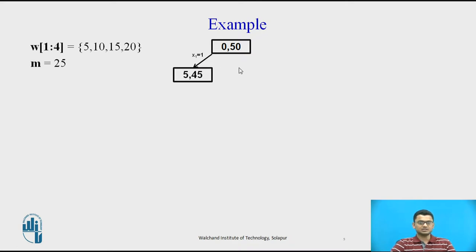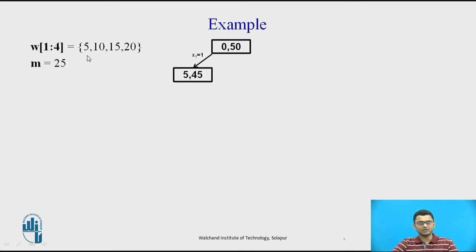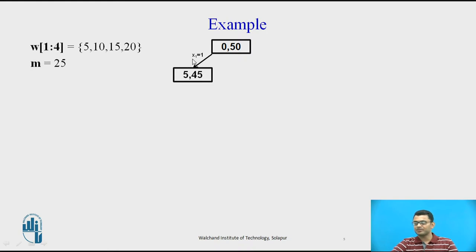We begin our procedure by adding the first node to the tree, meaning the first weight is included in the subset. When we add weight 5, the subset value becomes 0 plus 5 equals 5, and we reduce the first weight from the total summation. So the first node is 5 comma 45, where we have included the first weight in the subset.